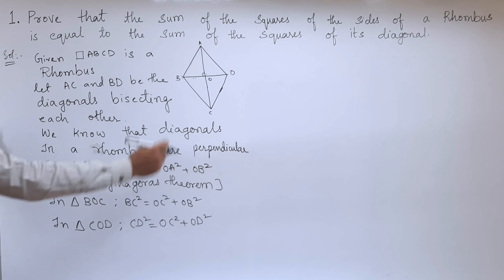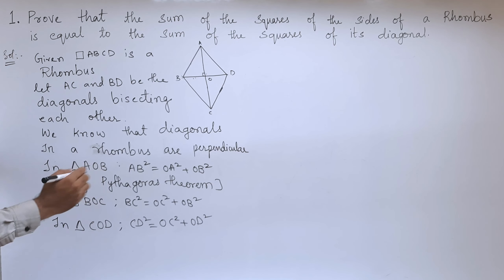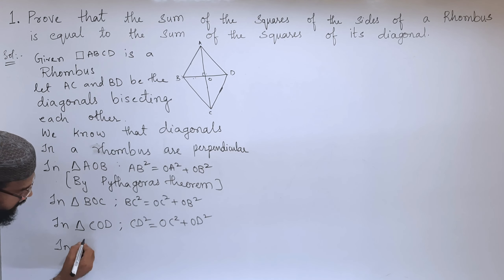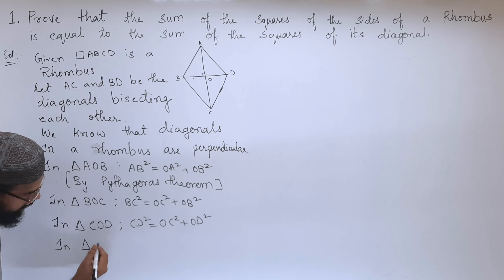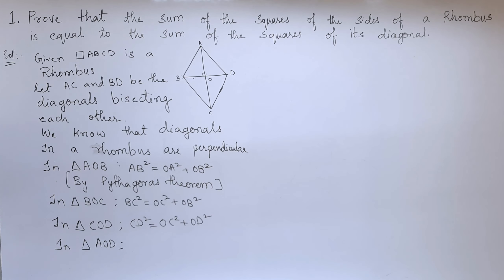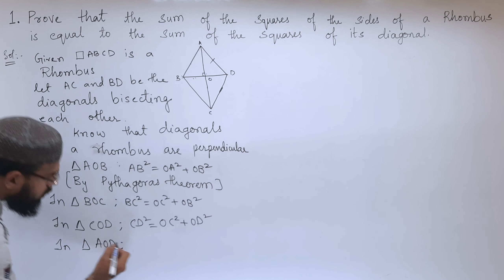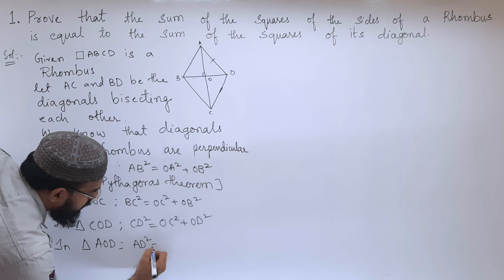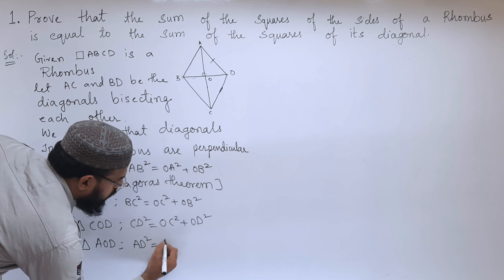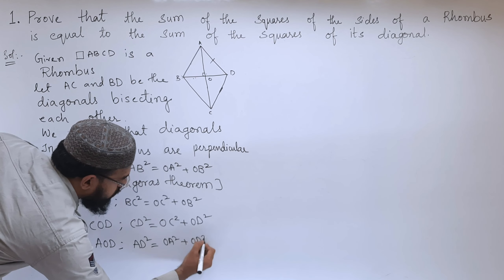Next, in triangle AOD, the hypotenuse is AD. So, AD² = OA² + OD².